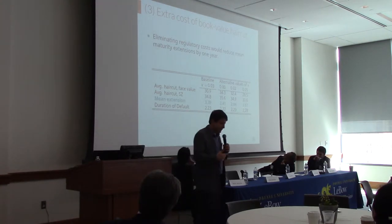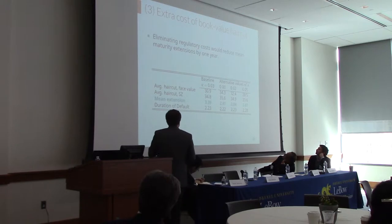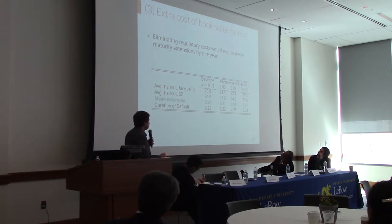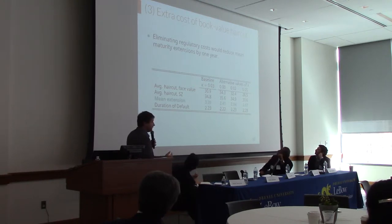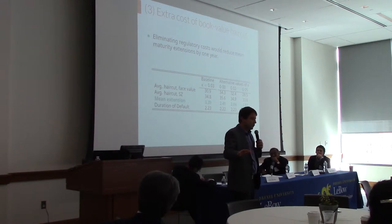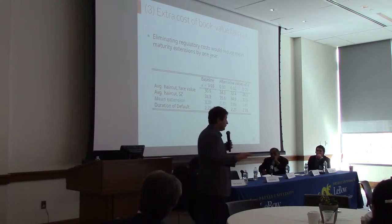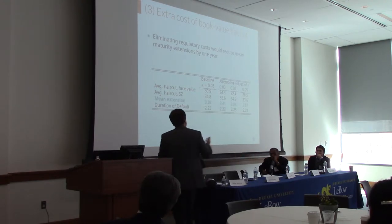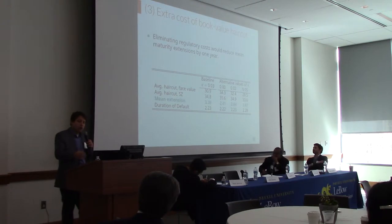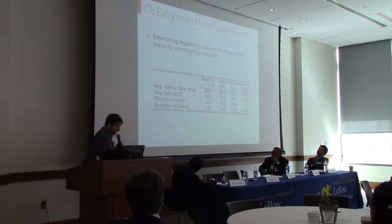The third force is the extra cost of book value losses, calibrated at 3%. If this value is zero, maturity extension is about one year shorter — around 2.4 years. But this parameter could be as high as 5%, and for some episodes like the Latin American debt crisis even higher. When this cost increases, maturity extensions increase — moving from 3% to 5% can push maturity extensions up to almost 4 years.